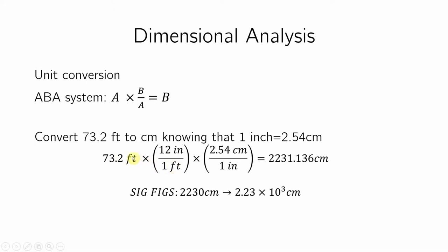I will put the foot at the bottom to cancel it, and I'll put inches at the top — that's what I want. So 73.2 times 12 over 1, since there are 12 inches in a foot. Then, now I don't want inches — I want centimeters. So inch goes to the bottom and centimeter goes to the top. The number goes with the unit, so 2.54 goes with centimeters at the top.